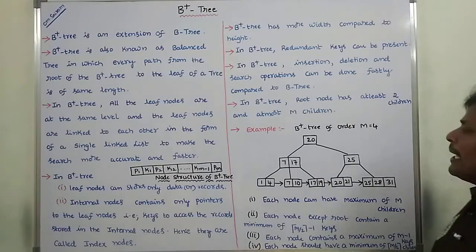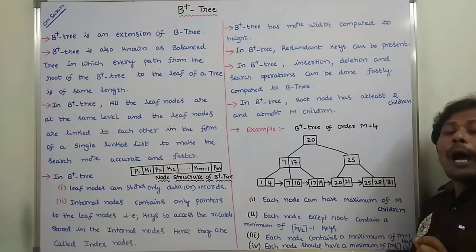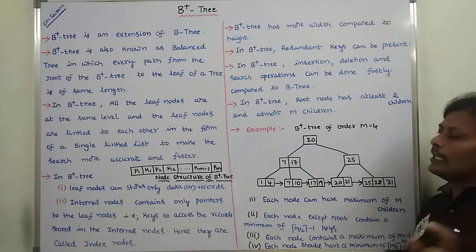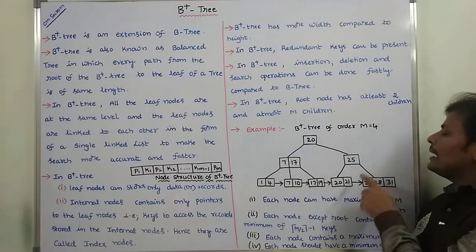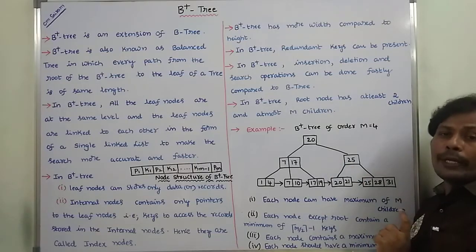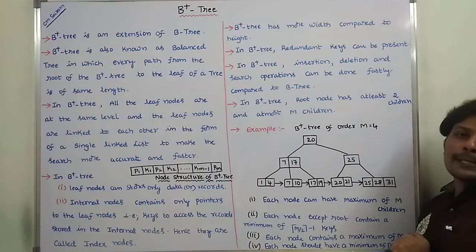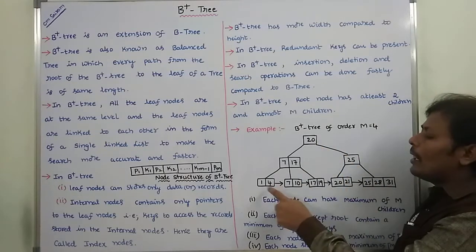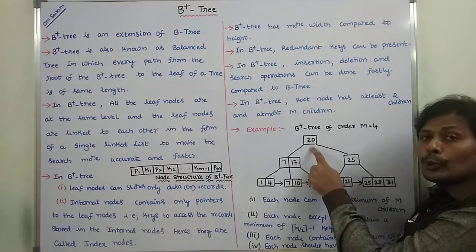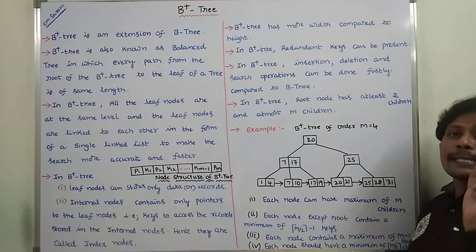Next, B plus tree is also known as a balanced tree. How can we say that B plus tree is a balanced tree? Suppose we are considering a B plus tree with order 4. It is a balanced tree. Here, this is the root node and these are the leaf nodes. The distance from the root node to every leaf node has the same length.